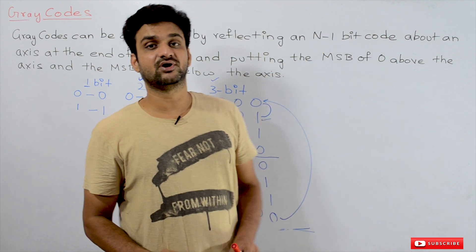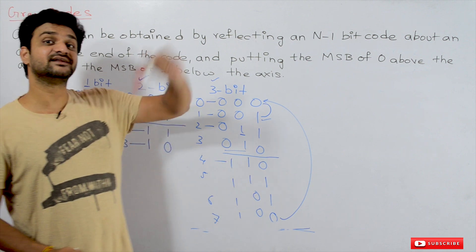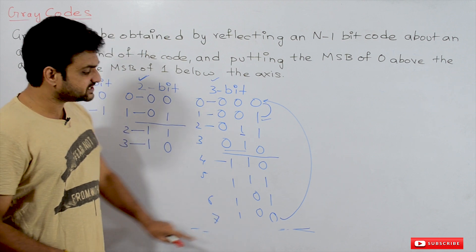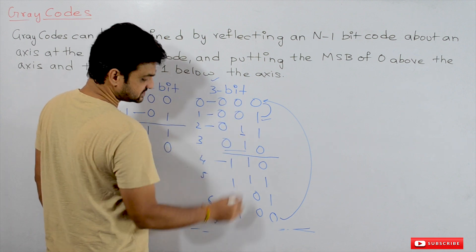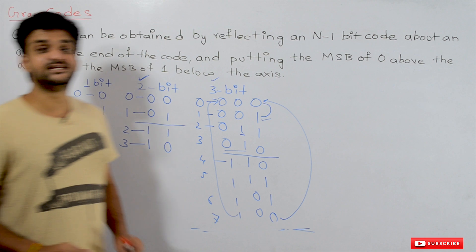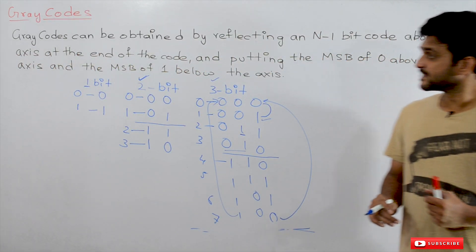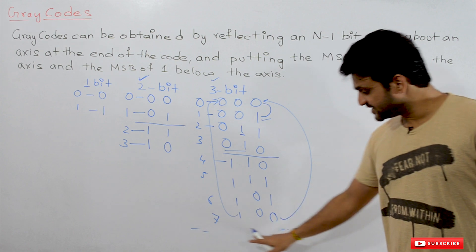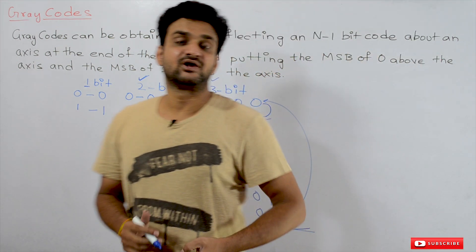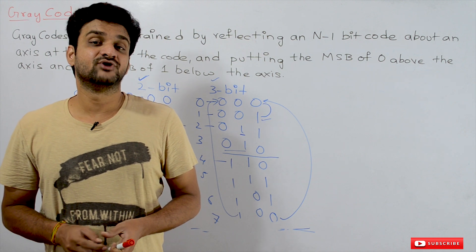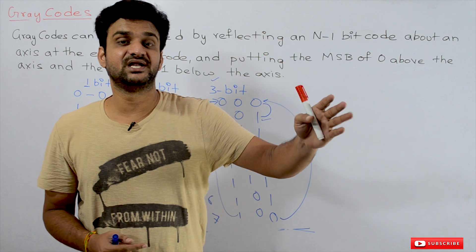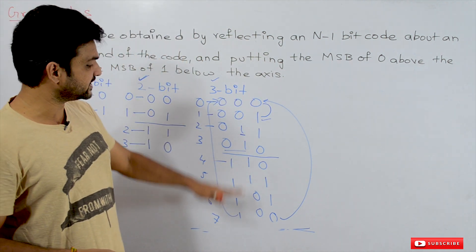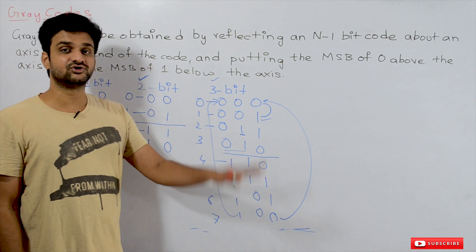Gray codes are also called cyclic codes because the last code is also a unit distance code from the first code. The last code 100 differs from the first code 000 by only one bit — by changing that 1 to 0 we get the first code. So the cycle repeats. If you generate the 4-bit gray codes you will get codes for all decimal numbers 0 to 15.